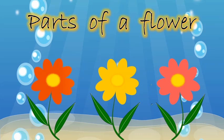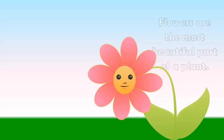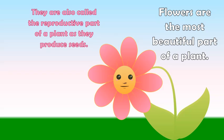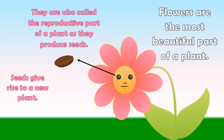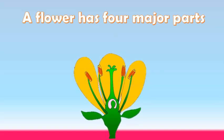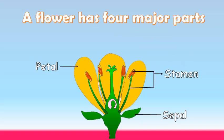Flowers are the most beautiful part of a plant. They are also called the reproductive part of a plant, as they produce seeds, which give rise to a new plant. A flower has four major parts: sepal, petal, stamen, and pistil.